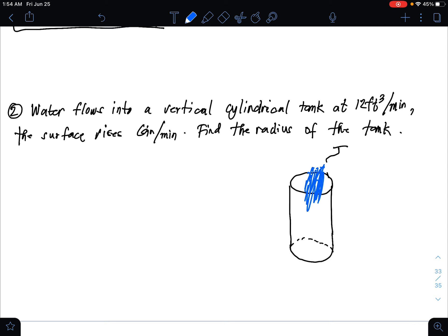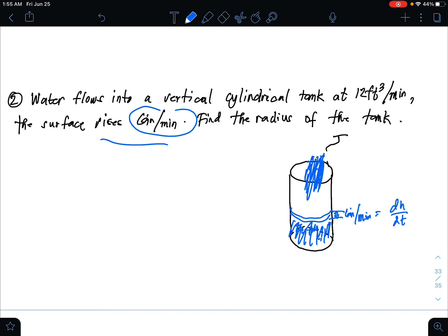The surface rises at 6 inches per minute. So this is dh over dt. The surface rises. Given is dh over dt and dV over dt.